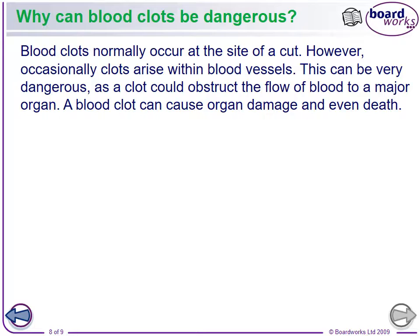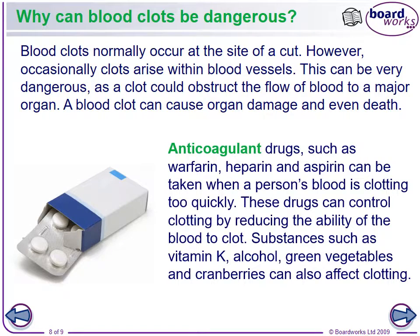Blood clots normally occur at the site of a cut. Occasionally clots arise within the blood vessels, and that's very dangerous. If a clot obstructs the flow of blood to an organ, it can cause damage or even death of the organ. People more prone to blood clots take anticoagulant drugs such as warfarin, heparin, and aspirin. These drugs reduce the ability of the blood to clot and can be taken when a person's blood clots too quickly or clots somewhere within the blood vessels.